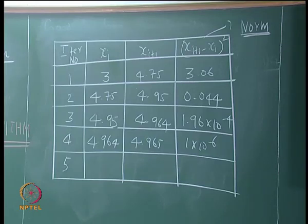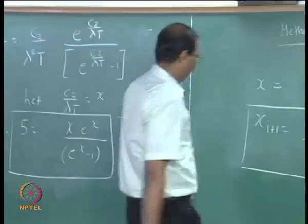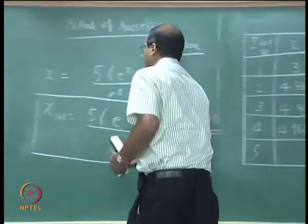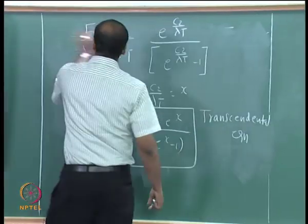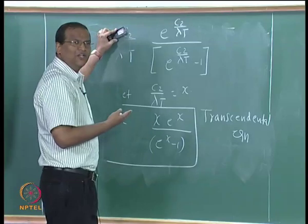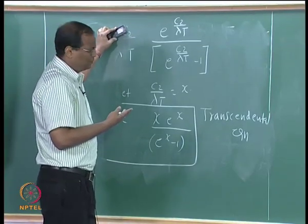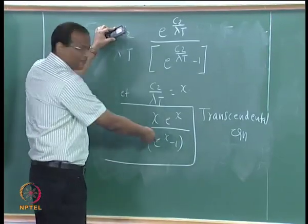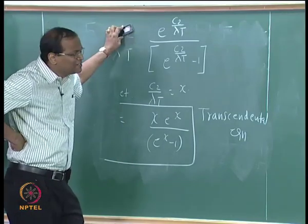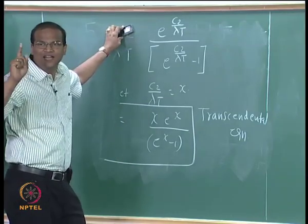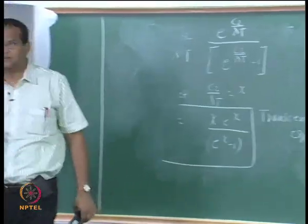The root of this equation — y = x * e^x / (e^x − 1) — is 4.965. We can solve it using the Newton-Raphson method also, but it is painful because of the e^x / (e^x − 1) term. The gain is that instead of four iterations, on the first or second iteration you will get the answer, because Newton-Raphson has quadratic convergence.